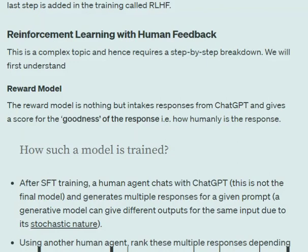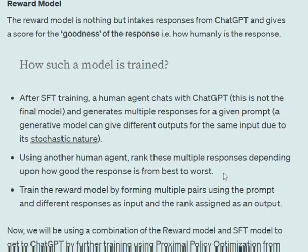The reward model gives a score for the response generated by an LLM — essentially how good or how human-like the response is. To train this model, human intervention is required. An agent chats with the LLM, generating multiple responses for the same prompt. Then another agent ranks these multiple outputs for a given prompt depending on how good each response is according to their knowledge.